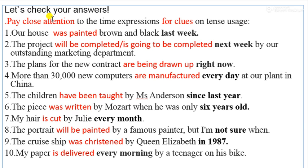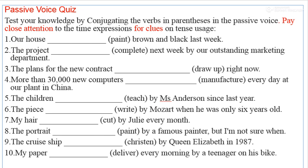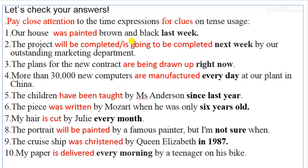Let's check your answers. The black color words are the time expression clues. Number one: 'Our house was painted brown and black last week' — the house is the object, focused on what was done. Number two: 'The project will be completed, or is going to be completed, next week by our outstanding marketing department.' Number three: 'The plans for the new contract are being drawn up right now.' Number four: 'More than 30,000 new computers are manufactured every day at our plant in China.'